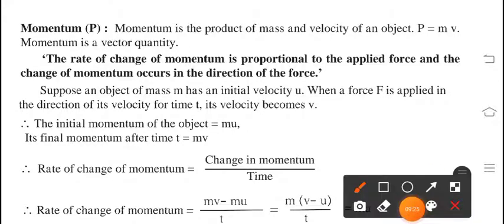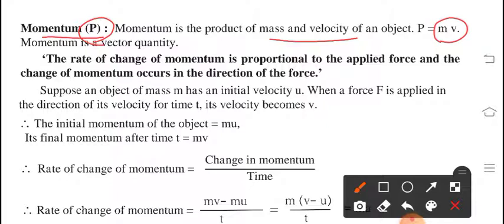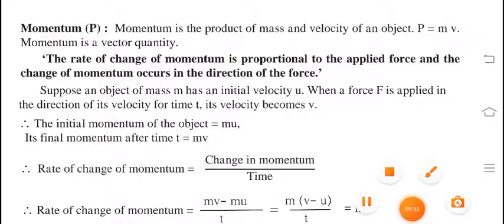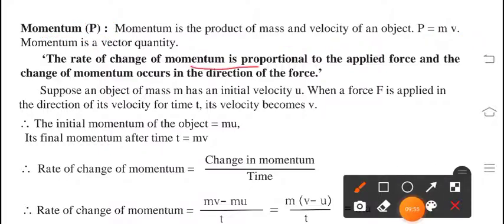So we can say that momentum is the product of mass and velocity of an object. For momentum, we use the letter P. Capital P is the letter for momentum, so P equals M into V — where M is mass and V is velocity. Velocity is a vector quantity, so we can say that momentum is a vector quantity. In the SI system, the unit of momentum is kilogram meter per second, while in CGS it is gram centimeter per second. The rate of change of momentum is proportional to the applied force, and the change of momentum occurs in the direction of the force.